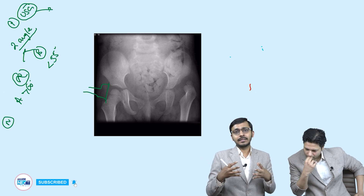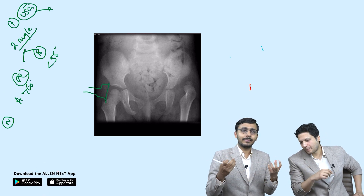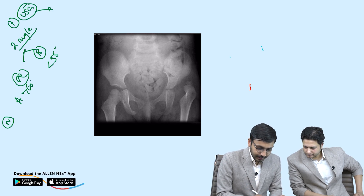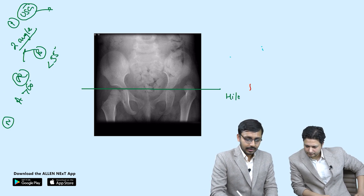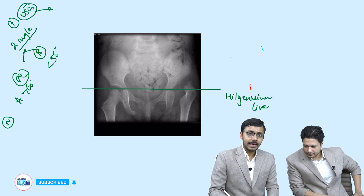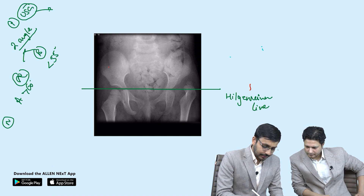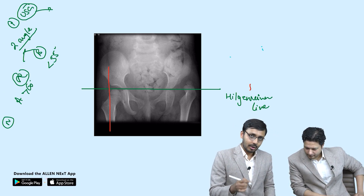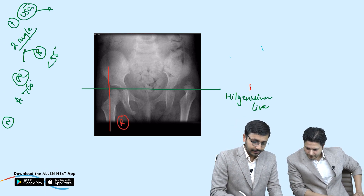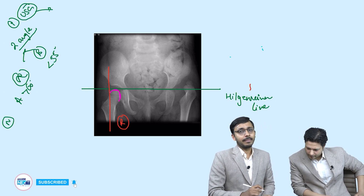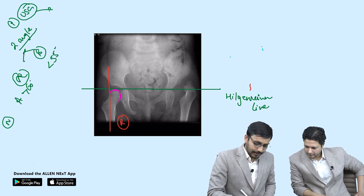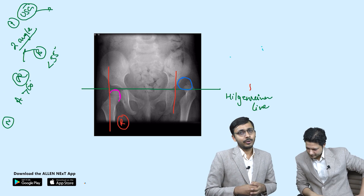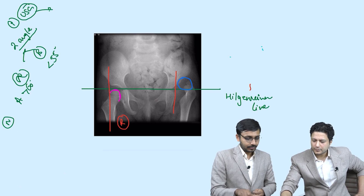For x-ray, two important lines are drawn: the Hilgenreiner line through the tri-radiate cartilage, and the Perkins line through the lateral margin of the ilium. In a normal hip, the femoral head lies in the inferior medial compartment of the resulting four-box grid. In DDH, the femoral head lies in the superior lateral quadrant.